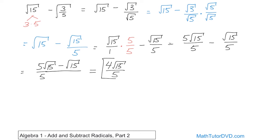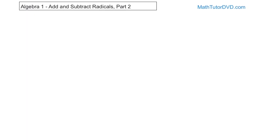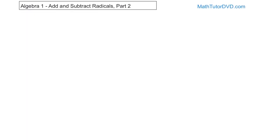It's really important to understand that process. We couldn't simplify the first radical, so with the second one we broke it into radical over radical, multiplied to rationalize the denominator, then found a common denominator and subtracted. Now let's do another problem: 3 times the square root of 18 plus the fraction 2 twenty-fifths under a square root.